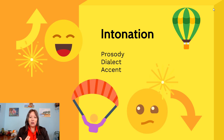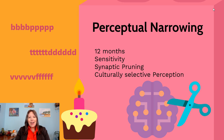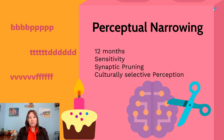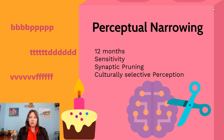An important concept in developmental psychology is that development isn't just about gaining skills — sometimes it's about losing them. Around 12 months of age, phonological awareness actually becomes more limited through perceptual narrowing, a process of synaptic pruning. Infants at six months can hear any phoneme from any language in the world, but by 12 months they can only hear and distinguish phonemes from the language they've been exposed to.